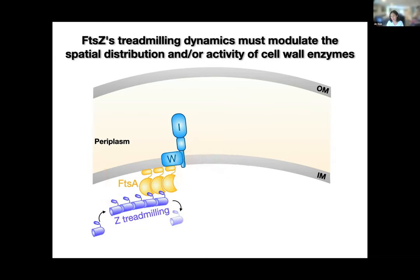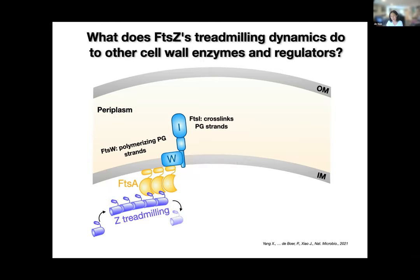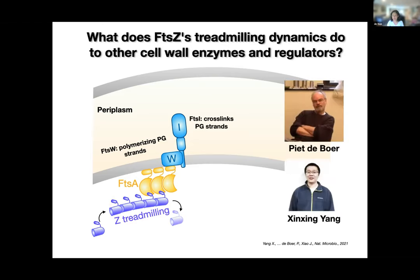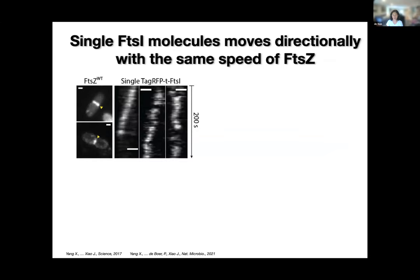If this hypothesis is really true, then the treadmilling dynamics must modulate the spatial distribution and the activity of those cell wall enzymes. Because all those proteins are dependent on FtsZ to come to the middle, some of those enzymes should show directional movement — really being transported by FtsZ to different places of the septum. We decided to look at two proteins essential among the large array of division proteins: FtsW and FtsI. FtsW is a polymerase that elongates the glycan strands; FtsI is the cross-linker responsible for crosslinking the peptide stems.